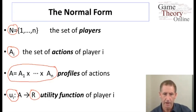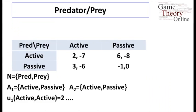Let's look at our predator-prey example. We already saw that we have two agents, the predator and the prey. The strategy sets for each of the agents are identical, consisting of two actions: passive and active. Similarly, the utility function for agent 1 — for example, the utility for the predator when he is active and the other agent is also active — is 2.